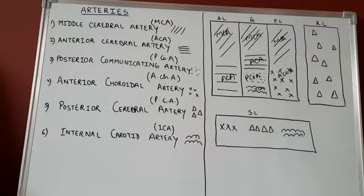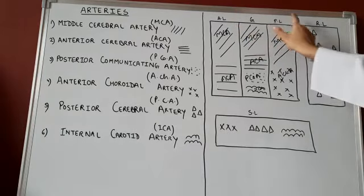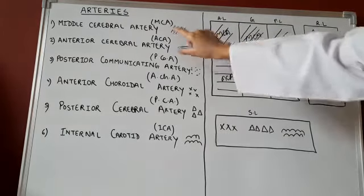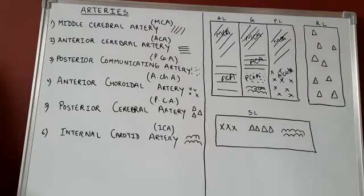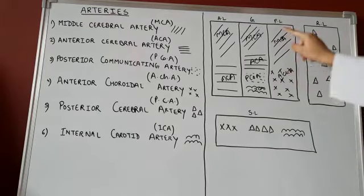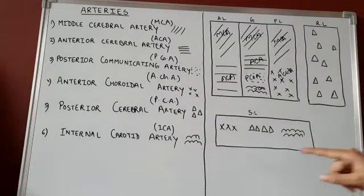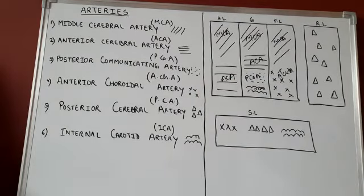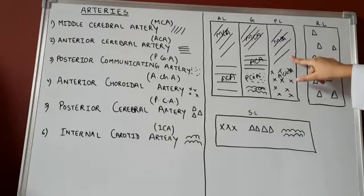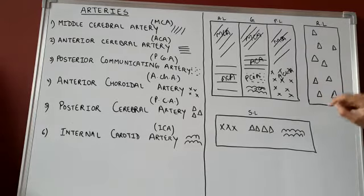One thing to remember is that the first three parts of the internal capsule — the anterior limb, genu, and posterior limb — are all supplied by the middle cerebral artery. In addition, the anterior limb and genu are supplied by the anterior cerebral artery. Furthermore, the genu is supplied by two more arteries: the posterior communicating artery and the internal carotid artery. The posterior limb, in addition to the middle cerebral artery, is also supplied by the anterior choroidal artery.